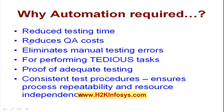Why is automation required? If you want to reduce testing time, automation reduces the time spent on QA activities, which is directly proportional to QA cost. It also eliminates manual testing errors. As human beings we can make mistakes — say we perfectly found a bug, but while logging the defect we may commit a mistake. Those kinds of manual testing errors will be avoided in automation testing because it will be very consistent and alert.